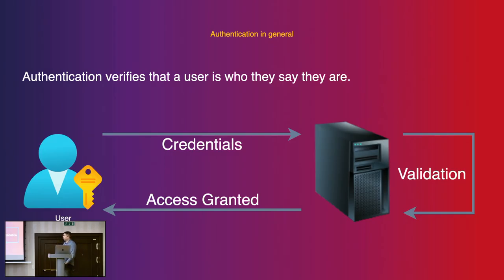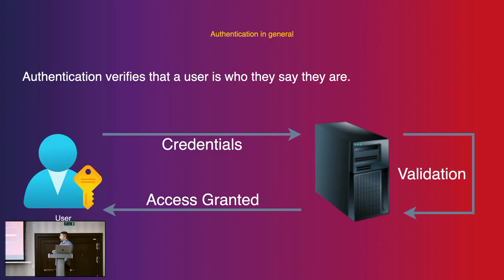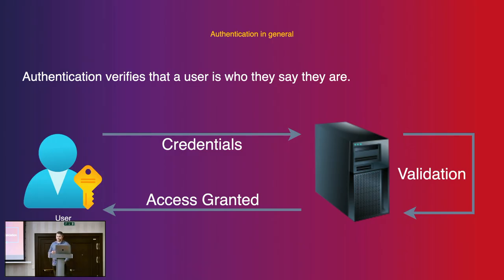When we talk about authentication, it's not brain surgery. There is a user which has long-lived credentials — it can be many things. These credentials are provided to the authentication server, which does the validation. When it's validated that the user is who they say they are, then access is granted and some sort of message is sent back that you are allowed to do further operations. In the next couple of slides we'll look at what can be sent as credentials and what can be received back when access is granted.